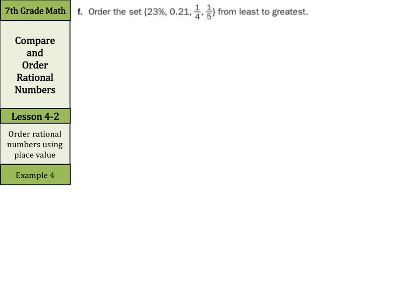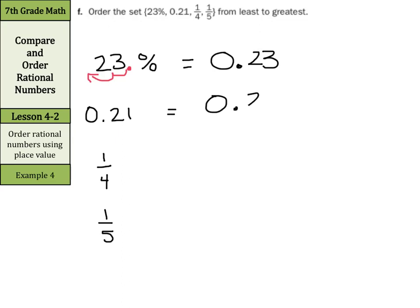Now to order the set 23%, 0.21, 1 fourth, and 1 fifth from least to greatest, what we're going to do here is to get all of these numbers into decimal form, and we'll use place value to order them. If I write down vertically our list here, if we want to get 23% into a decimal, slide that back 2 to the left, and this becomes 0.23. Our 0.21 is already in decimal form. As for our 1 fourth, this becomes 0.25.